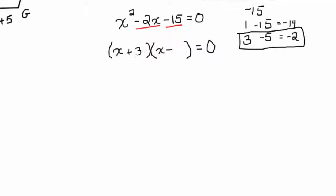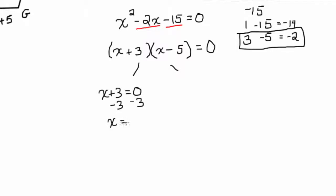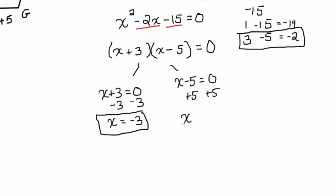So we know it's going to be x plus 3 times x minus 5. Setting each factor equal to 0: x plus 3 equals 0, so subtract 3 from both sides — x equals negative 3. And x minus 5 equals 0, so add 5 to both sides — x equals 5.